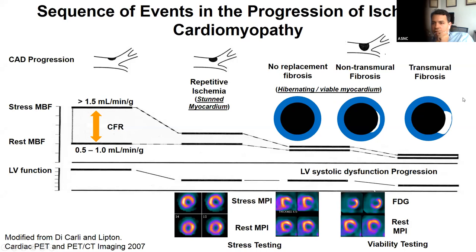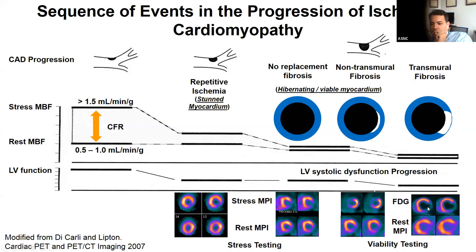Unfortunately, if the process proceeds, the natural history leads to transmural scar. In FDG evaluation of these patients, we see a large defect with reduced perfusion and no metabolic activity, consistent with non-viable myocardium due to transmural scar.